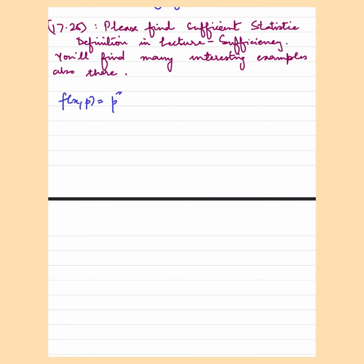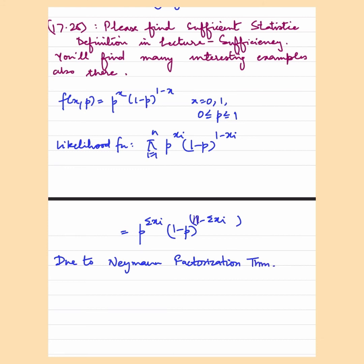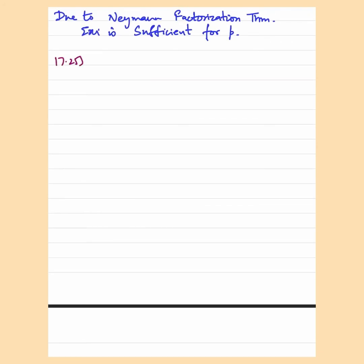Now we have the function f(x; p) equals p to the power x into 1 minus p to the power 1 minus x. This is a Bernoulli distribution. We find the likelihood function, which is the product of n samples taken. Upon taking the likelihood function, we obtain p to the power summation xi into 1 minus p to the power n minus summation xi. By the Lehmann-Scheffé factorization theorem, h(x) equals 1 and g(T(x), theta) equals p to the power summation xi into 1 minus p to the power n minus summation xi, confirming that summation xi is sufficient for p.